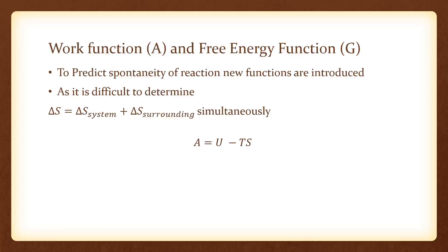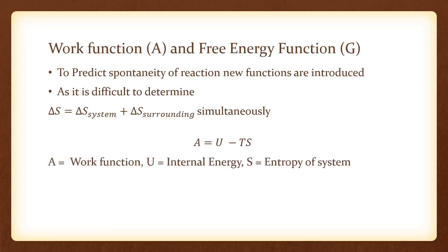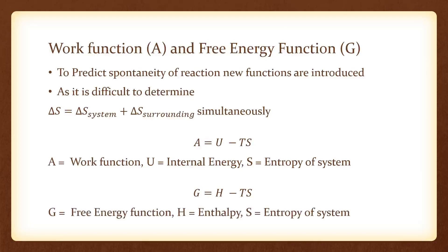As per definition, work function A is given as: A equals U minus TS, where A is the work function, U is internal energy, and TS is the waste part of energy or entropy factor of the system. Again, G is defined as G equals H minus TS, where G is the free energy function, H is enthalpy, and TS is again the waste part of energy where S is the entropy of the system.